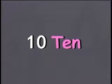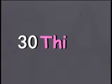Now let's see the number names we just read as words. Ten — T, E, N. Ten. Twenty — T, W, E, N, T, Y. Twenty. Thirty — T, H, I, R, T, Y. Thirty. Forty — F, O, R, T, Y. Forty. Fifty — F, I, F, T, Y. Fifty.